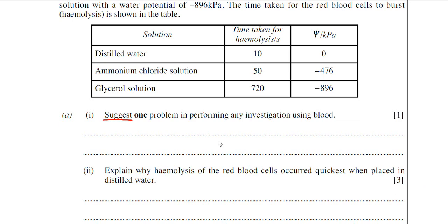Blood transports various pathogens, meaning you can get an infection from blood. A good example of a disease you can catch from infected blood is HIV, which leads to AIDS. Another possible answer is that the blood could clot, although the examiner will also accept that. When doing experiments on blood, you would use an anticoagulant — something that stops the blood from clotting. So the answer is a risk of infection.